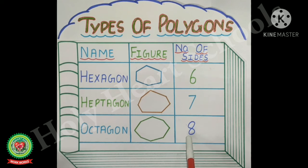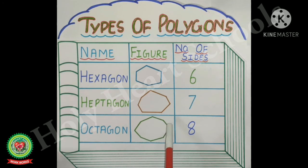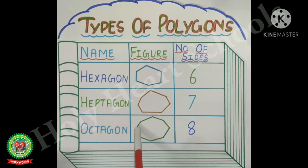Next is the polygon which has eight sides. That polygon is called an octagon. This figure is an octagon — it has one, two, three, four, five, six, seven, eight sides. So it is an octagon.